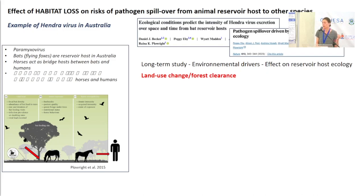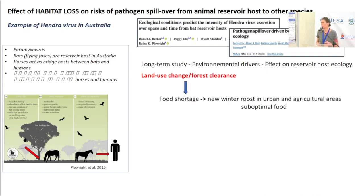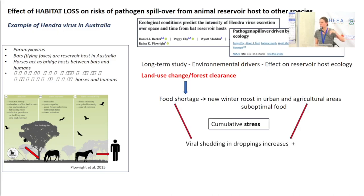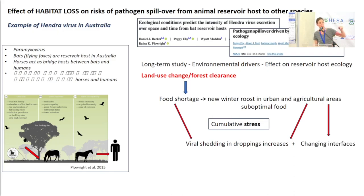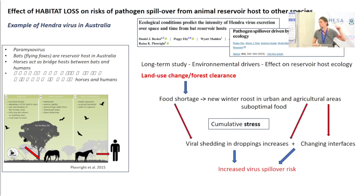These bats normally forage in forests, especially over the winter. What researchers found is that there's a lot of land use change and forest clearance for urbanization and agricultural purposes, so these bats go through periods of food shortage. During food shortage, they start roosting in smaller colonies in urban and agricultural areas. After food shortages and in these new colonies, viral shedding in the droppings actually increases, because these factors bring cumulative stress, the immune system is affected, and this impacts the dynamics of viral circulation. In these new winter roosts, there is also a changing interface — closer interface with domestic animals, with horses — leading to more outbreaks in horses and hence an increased spillover risk in humans.